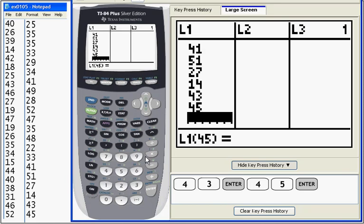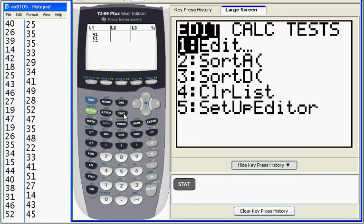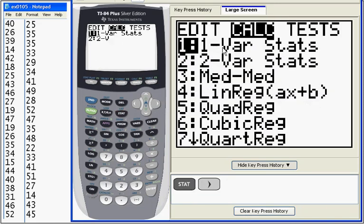If I want to do my one-variable stats with this set of numbers, I'm going to go back to the stat key. I'm going to make one right arrow over to the calc menu, and I'm going to hit the number one for one-var stats.